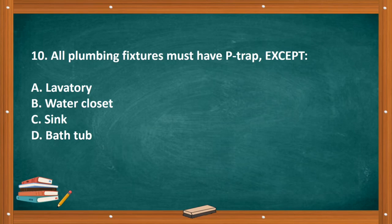The correct answer is letter C, 3.0 m. Question number ten: All plumbing fixtures must have P-trap except: A. lavatory, B. water closet, C. sink, D. bathtub.